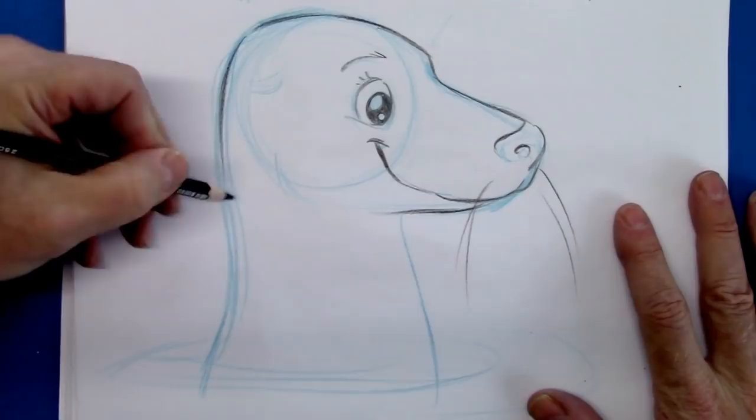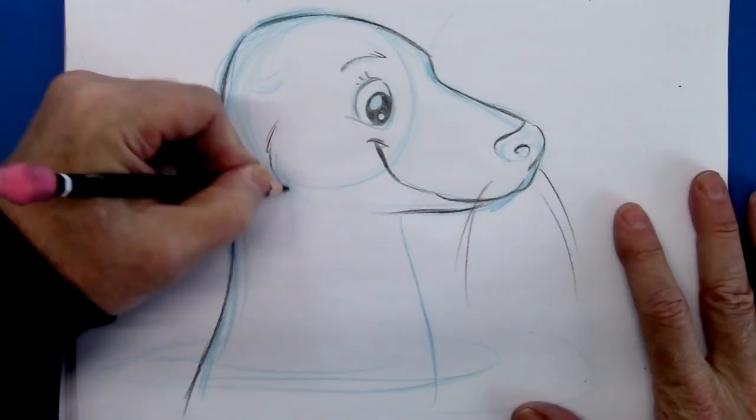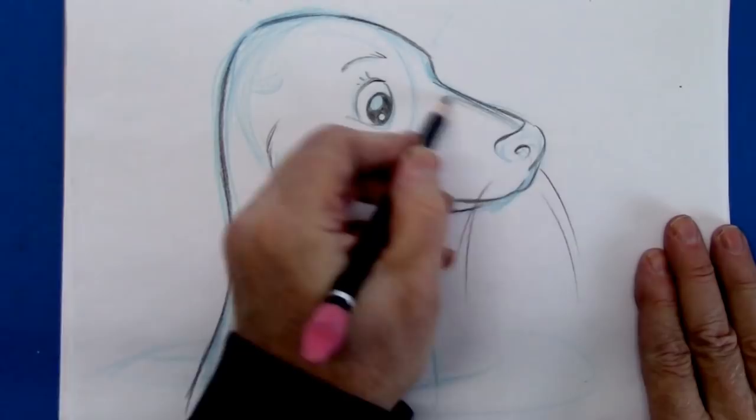There's that occipital protuberance back here. That's really the crown of the forehead on an animal. Put the cheek, indicate a little bit of a cheek area.